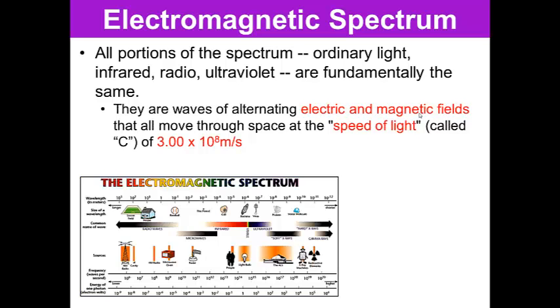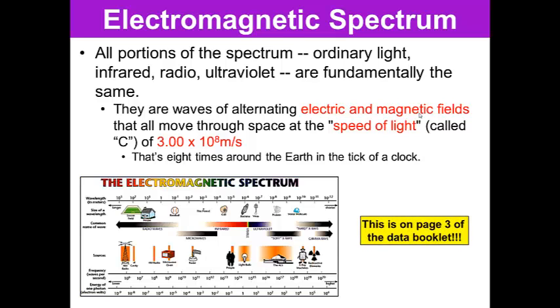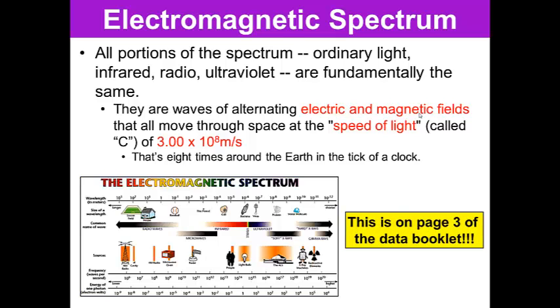They are waves of alternating electric and magnetic fields that move through space at the speed of light. So the speed of light is often called C, and it is 3 times 10 to the 8 meters per second. That's 8 times around the Earth in 1 second. You can find this information on page 3 of your Science 30 data book.